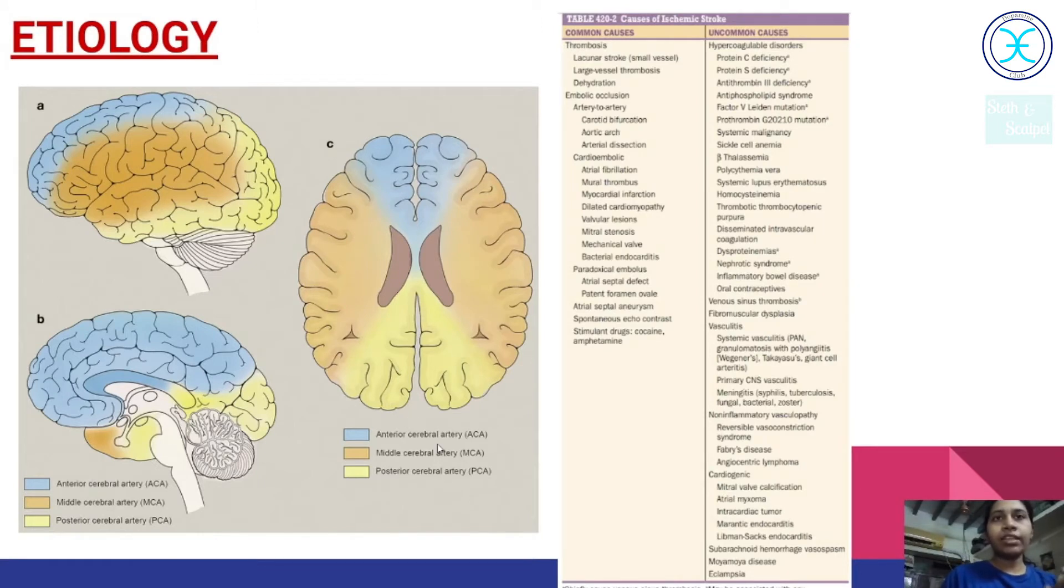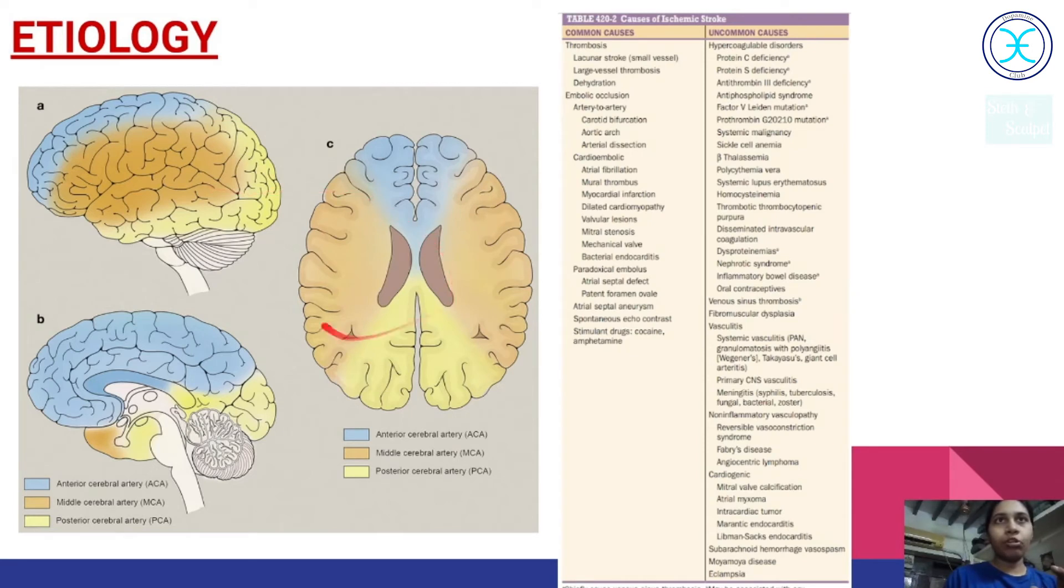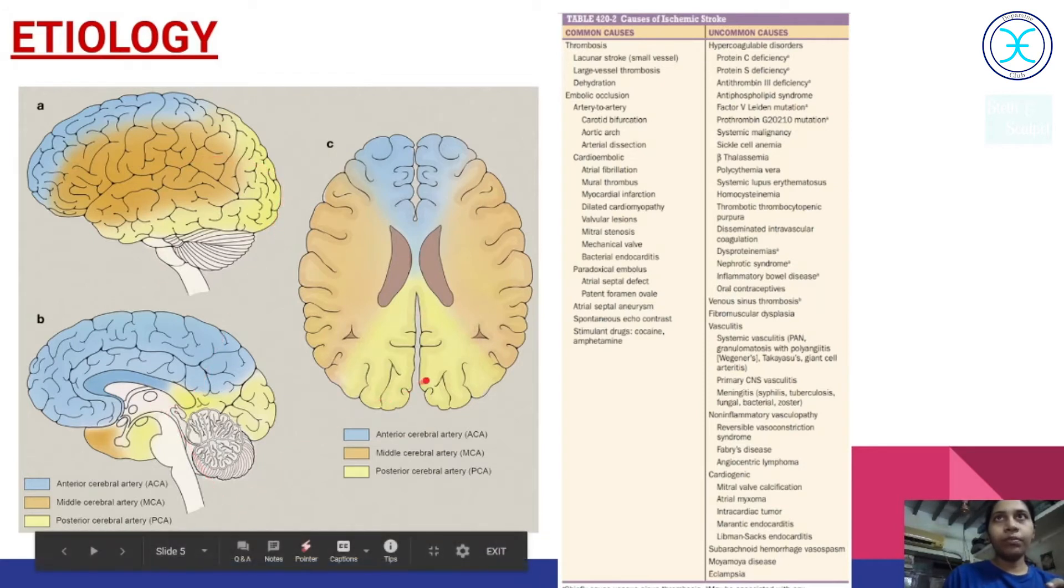Now let us see the etiology. Here we can see the three arteries: anterior cerebral, middle cerebral, and the posterior cerebral. Here, the anterior cerebral artery supplies mainly the frontal lobe. The middle cerebral supplies the parietal lobe and the temporal lobe as we can see in this figure. The posterior cerebral artery supplies the occipital lobe.